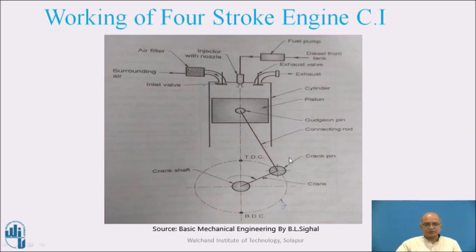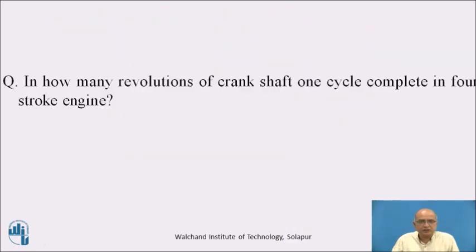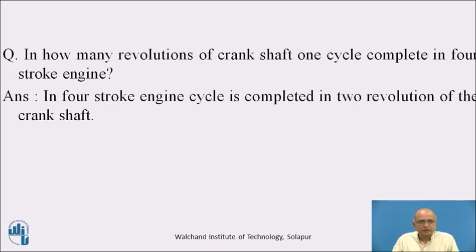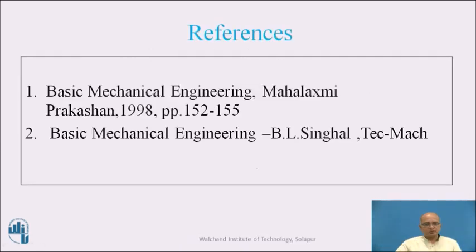This is the difference between the 4-stroke compression ignition and the 4-stroke spark ignition engine — also called the 4-stroke diesel and 4-stroke petrol engine. Question: in how many revolutions of the crankshaft does one cycle complete in a 4-stroke engine? In a 4-stroke engine, the 4 strokes are completed distinctly and the cycle is completed in 2 revolutions of the crankshaft. Thank you.